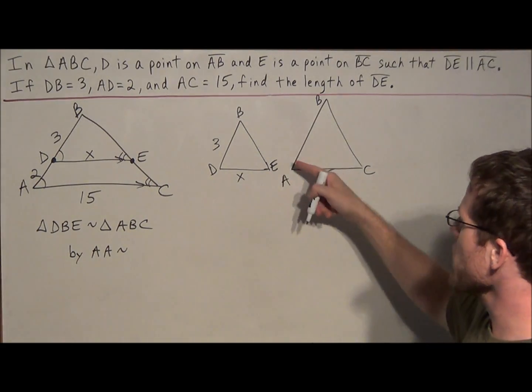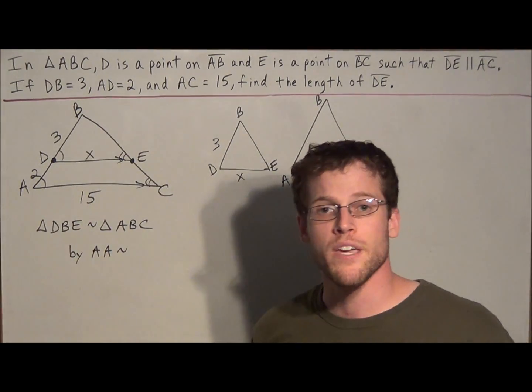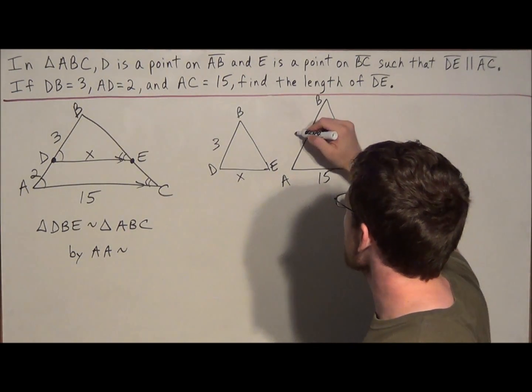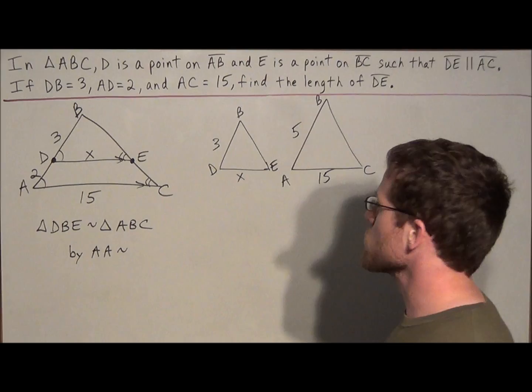But now let's just do all the work right here. AB, we could find the length of AB by adding up these two smaller segments. We have 2 plus 3 is 5, so the length of AB is equal to 5.